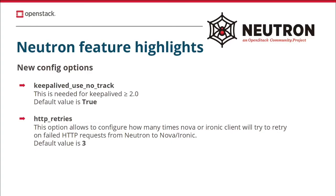Another new config option is `http_retries`, which is a Neutron server config option. It specifies how many times the Nova or Ironic client used by Neutron should retry API requests — for example, notifications to Nova that a port has been provisioned. By default we retry three times in case of a network outage or other networking issue during the first request sent to Nova, but you can of course change this to another value.